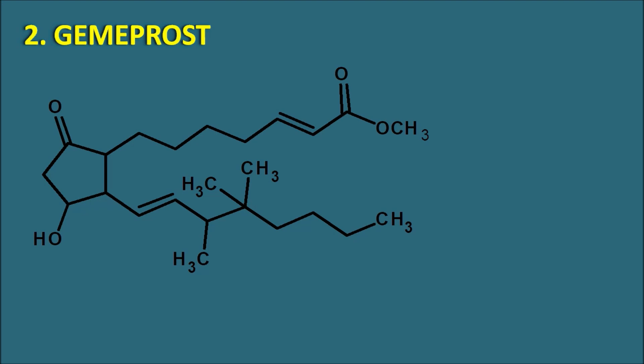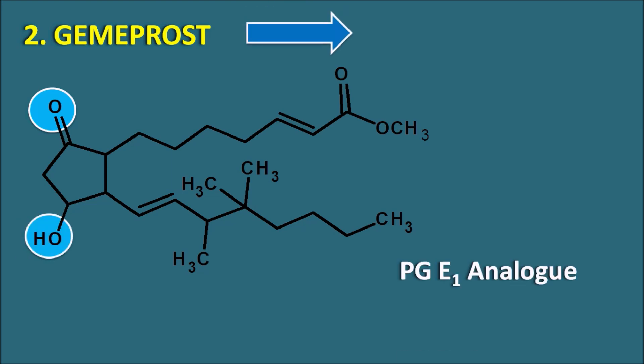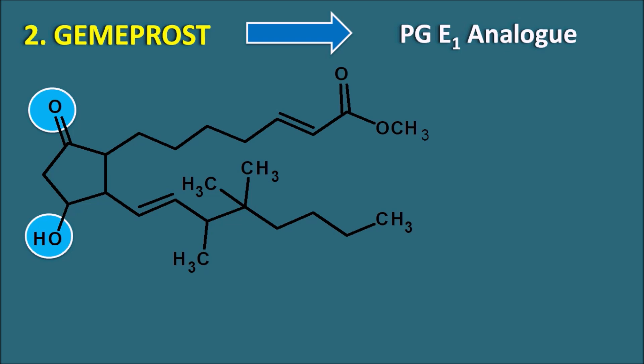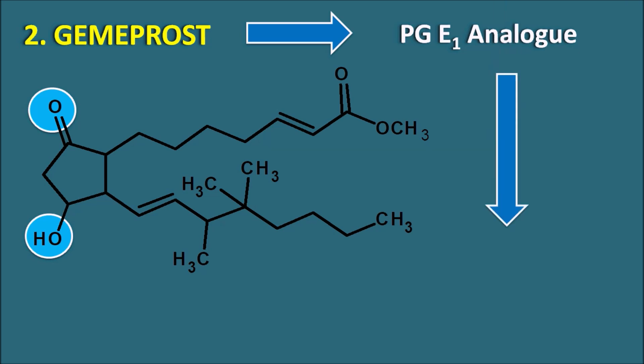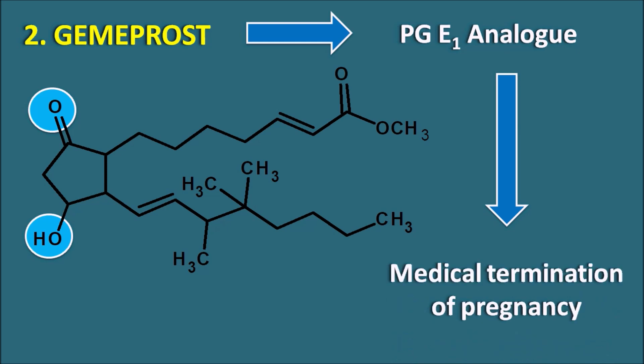The second drug is gemeprost. Gemeprost has a structure where, again, the 9th position has a keto group and the 11th position has an OH group, making it a prostaglandin E analog. Unlike misoprostol, it does not have a free carboxylic acid — it has an ester functionality at the first position. This drug also increases uterine contractions and is indicated for the medical termination of pregnancy.